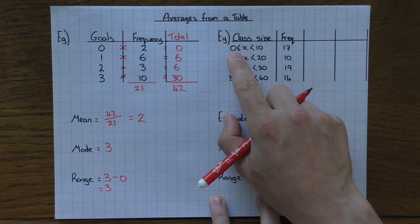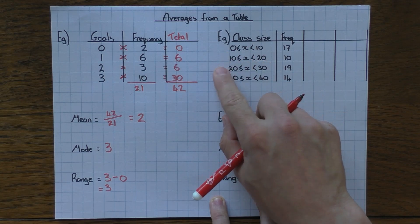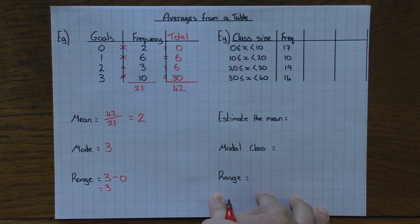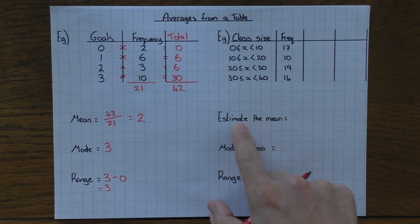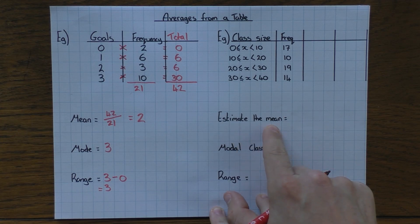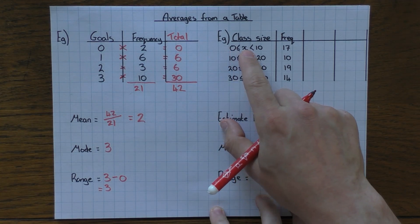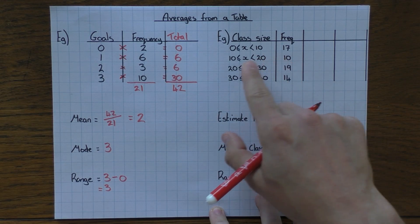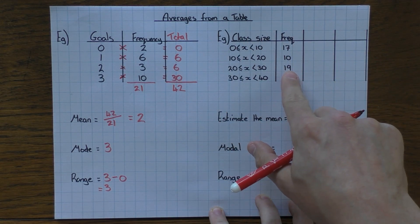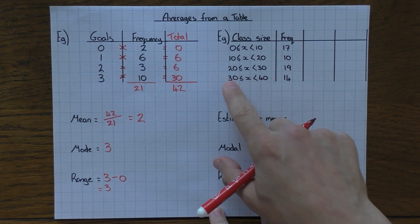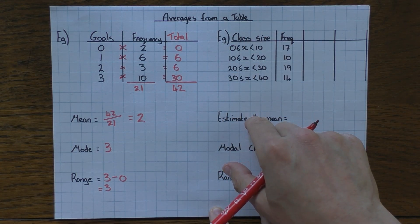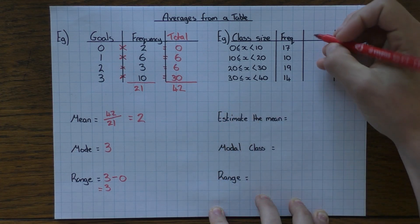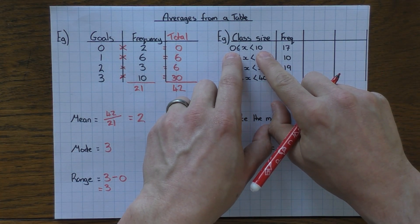The format is always the same: multiply value by frequency for totals, divide by total frequency for the mean, find the highest frequency for the mode, and subtract smallest from largest for the range. Now, grouped frequency is slightly different — values are in intervals like 0–10, 10–20, 20–30. The question will say 'estimate the mean' because we don't know the exact values within each group.